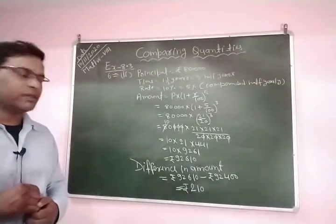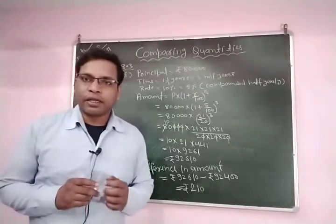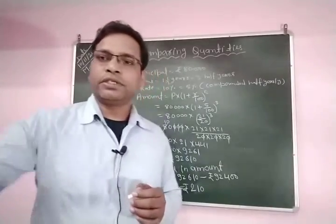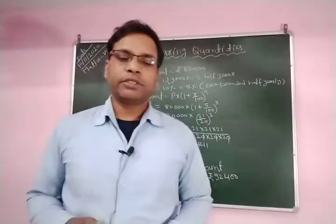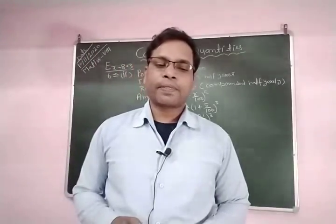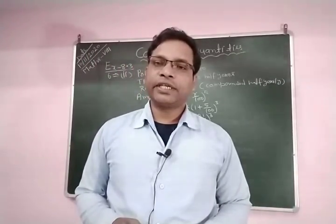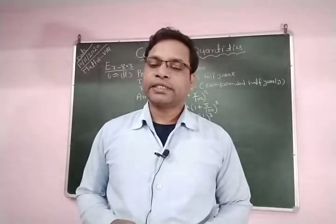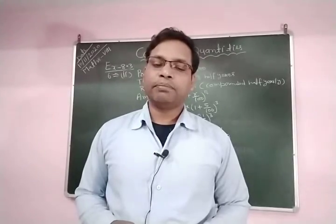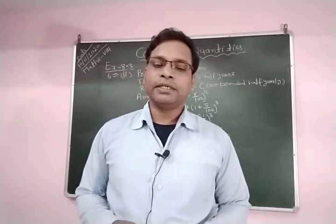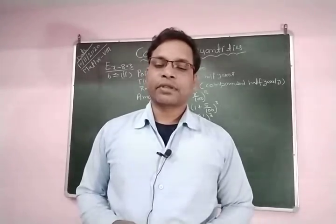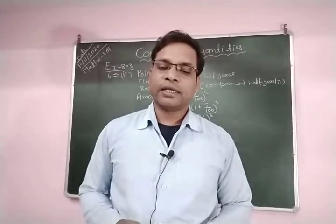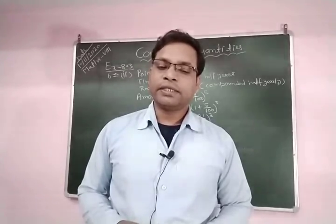I hope you understood this question. Now we are going to discuss next question, question number 7. In question number 7, Maria invested Rs.8,000 in a business. She would be paid interest at 5% per annum compounded annually. Find the amount credited to her name at the end of second year, and find the interest for the third year.